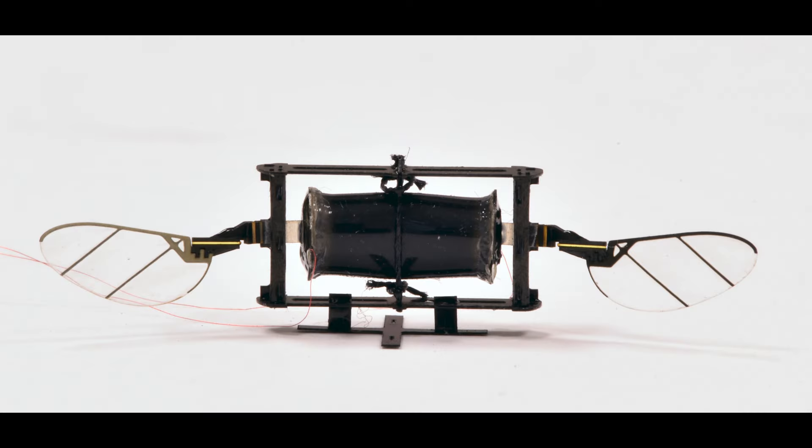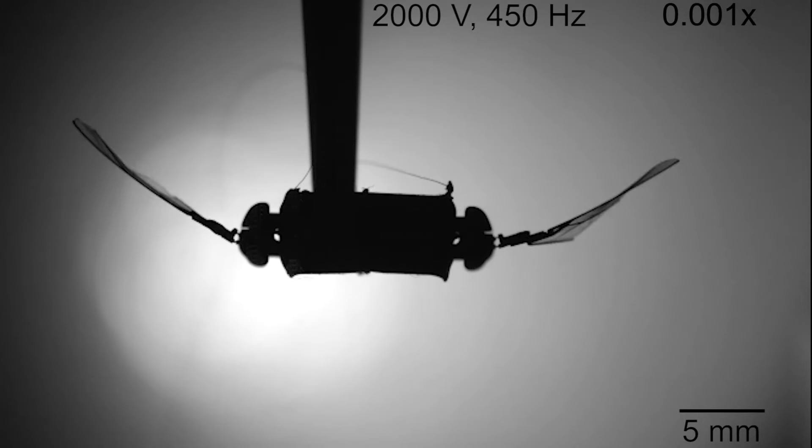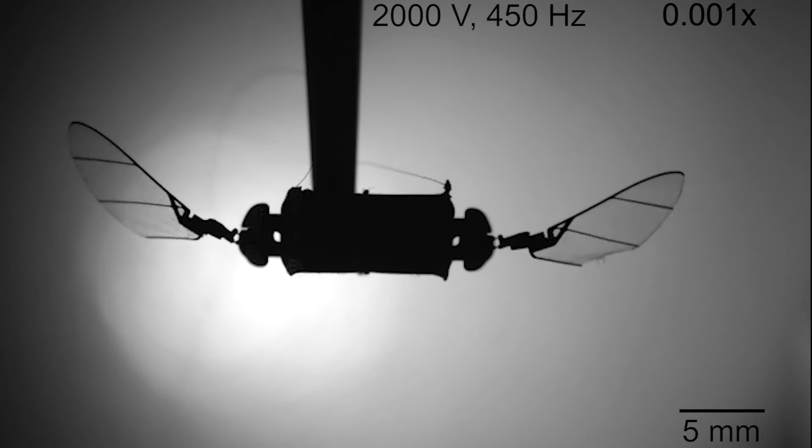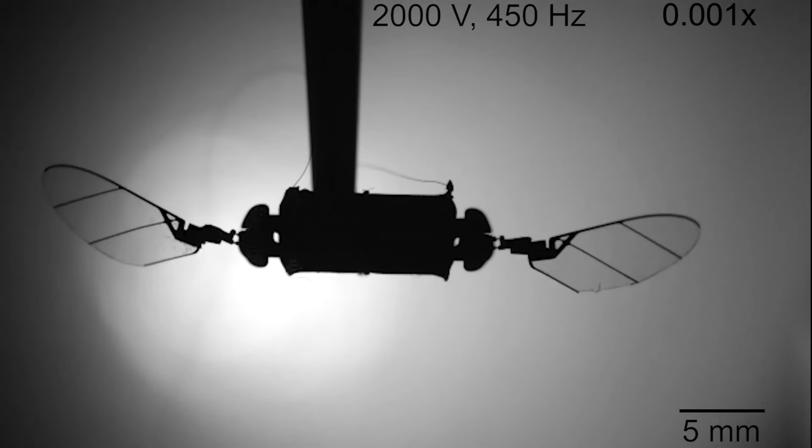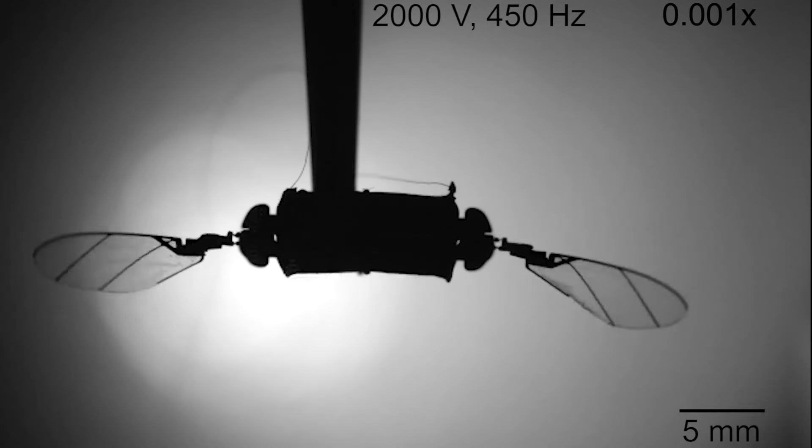This new generation of tiny drones are powered by a new class of soft actuator made of thin rubber cylinders coated in carbon nanotubes. When voltage is applied to the carbon nanotubes, they produce an electrostatic force that squeezes and elongates the rubber cylinder.